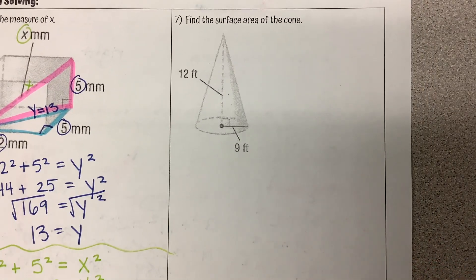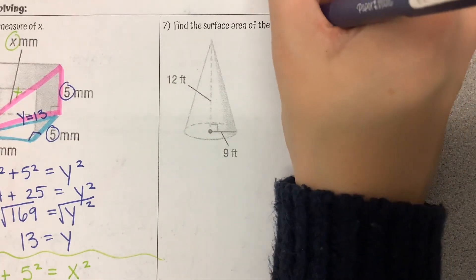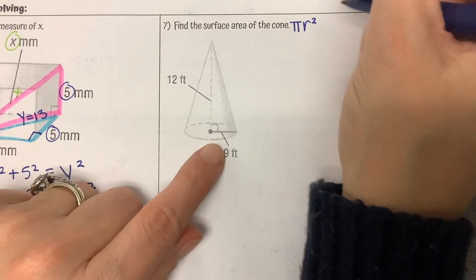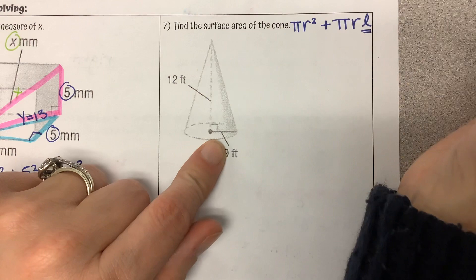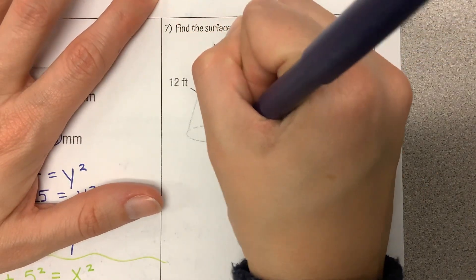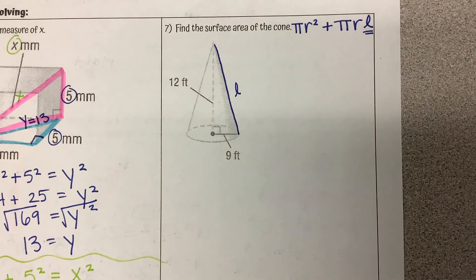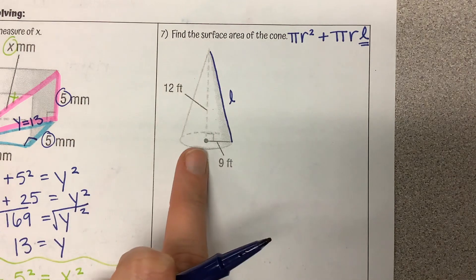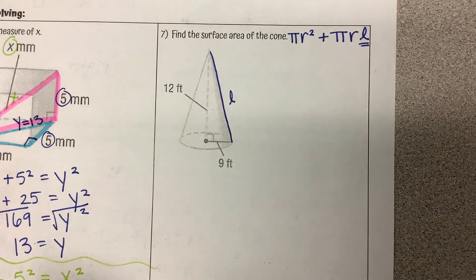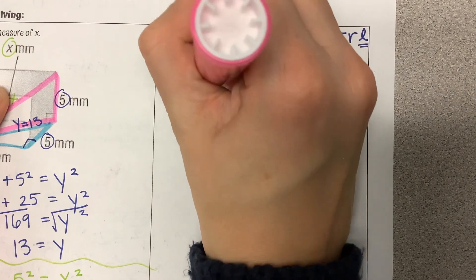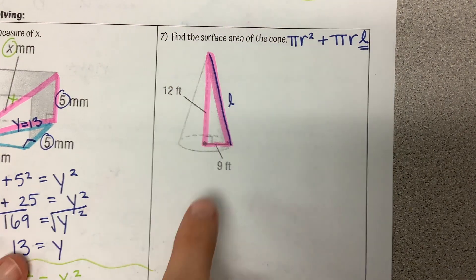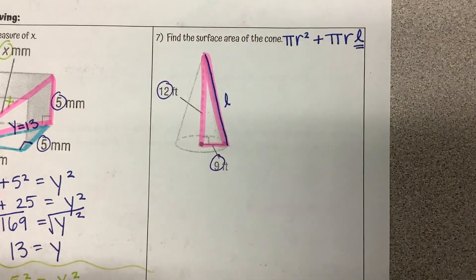One more problem solving — this time involving surface area of a cone. Let's think back to that formula: pi R squared for our circular base plus pi R L for that lateral surface area, where L is the slant height. Right now, we don't have the slant height measure — we only have the height of the cone, which would be used for volume. We need the slant height for surface area. I can see a triangle formed. We are given the two legs: 9 and 12. We need to solve for this slant height.